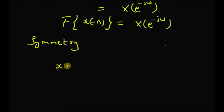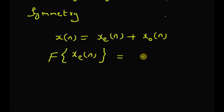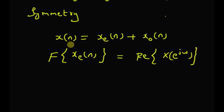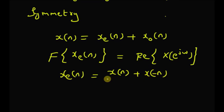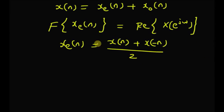A signal x(n) can be written as the sum of two components: the even component and the odd component. The DTFT of the even component is equal to the real part of the DTFT of the complete signal x(n). The even component x_e(n) is defined as x(n) plus x(−n), divided by two.